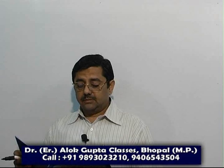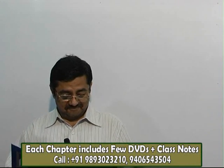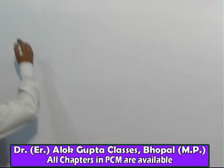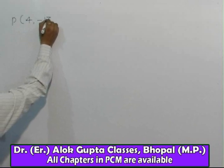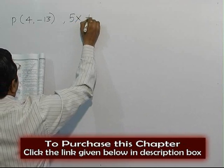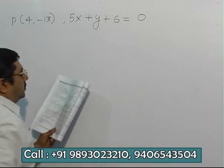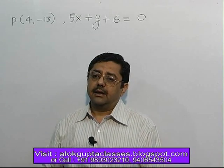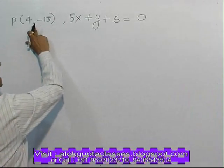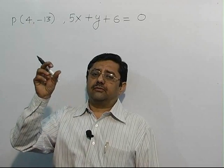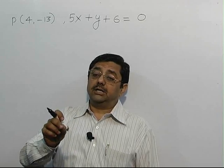Type 6, question number 5: the reflection of the point (4, -13). One point is given (4, -13), this is the point on the straight line and straight line is given as 5x plus y plus 6 equal to 0. This line acts as mirror. This is the point of the image.